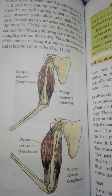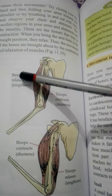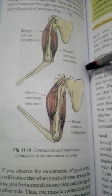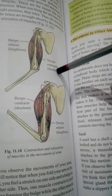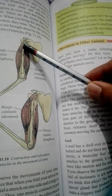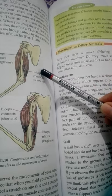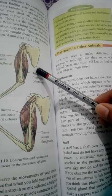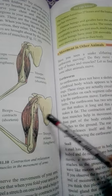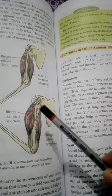When you bring the arm back to a straight position, the muscles relax. Thus, the movement of bones is brought about by the contraction and relaxation of muscles. In the picture, you can see: when biceps relax, triceps contract and become shortened.